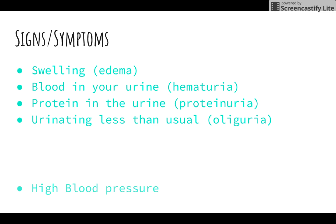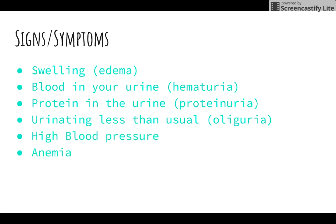Signs and symptoms: swelling, blood in the urine, protein in the urine, urinating less than usual, high blood pressure, and anemia.